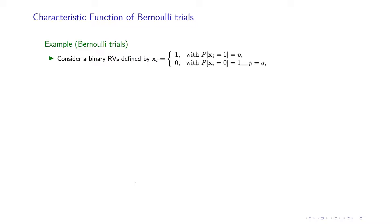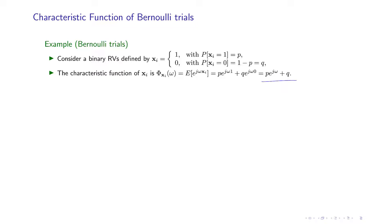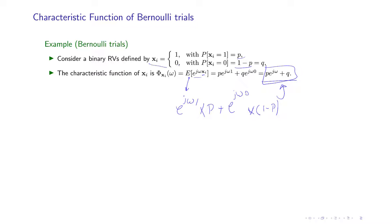As an example, suppose you have a set of binary random variables — a Bernoulli trial — where each x_i is 1 or 0 with probability p and 1 minus p. The characteristic function of each random variable is computed as the expected value of e to the power j omega x_i, which equals e^(j omega * 1) times p plus e^(j omega * 0) times (1 minus p). Simplifying, you get the characteristic function of a binary random variable. If all variables have the same probability mass function, their characteristic functions are also identical.